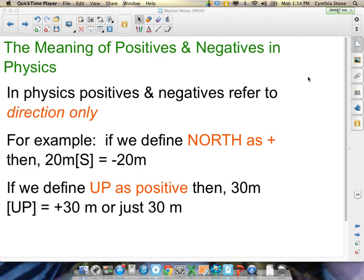Just making sure we're clear on what positives and negatives mean in physics. Almost always, positives and negatives only mean direction. I suppose with electromagnetism, it can mean negative charge, but in motion, certainly, we refer to it as direction.